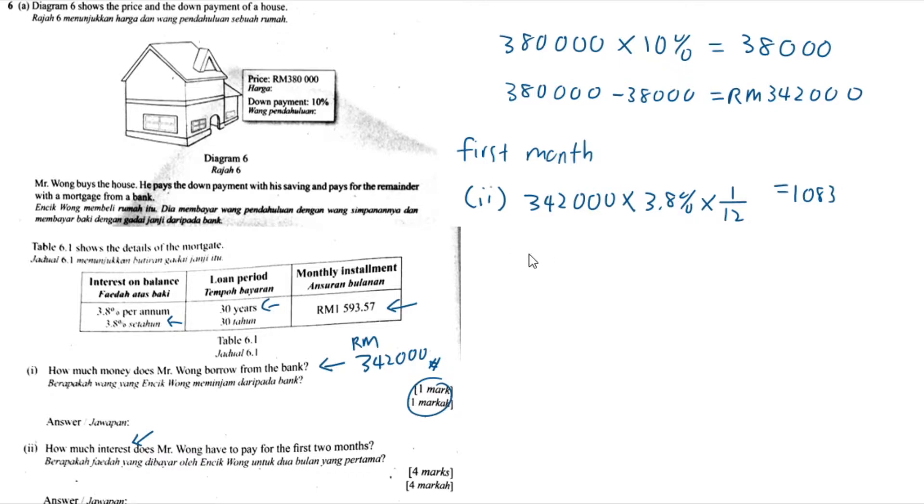And then what we need to do is use $342,000. This is the first month. Now we are required to calculate the second month. So how to calculate the second month. We use the $342,000 plus 1083, which is the interest. You will get 343083.